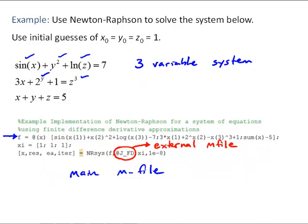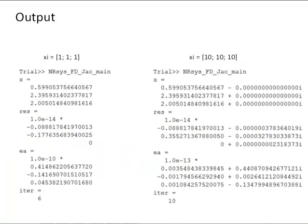So, we can go back here, call this function, and see what we get. I've actually included two outputs here. The first is for our initial guesses of 1, 1, and 1. And we see that Newton-Raphson solves the system.